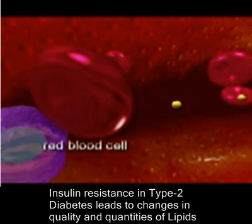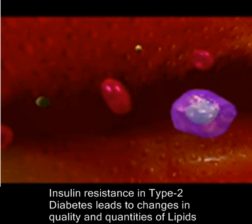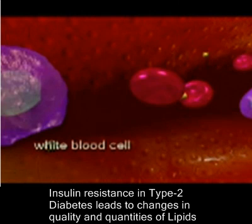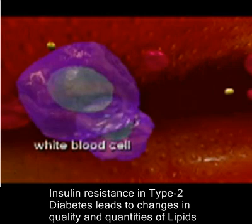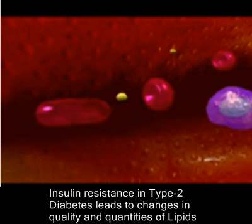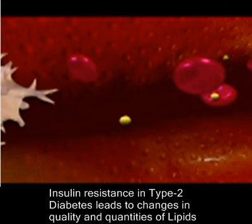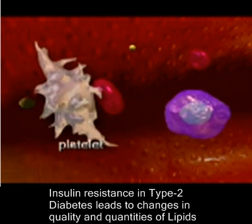Blood contains red blood cells, white blood cells, platelets, and nutrients.